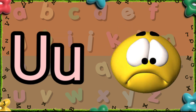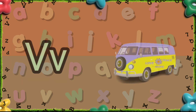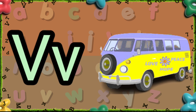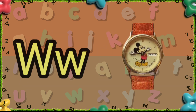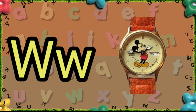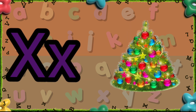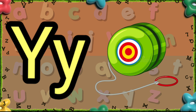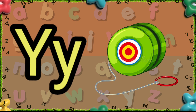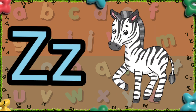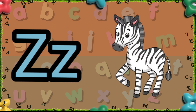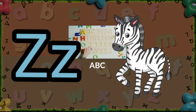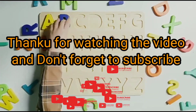U is for Upset. V is for Van. W is for Watch. X is for X-mas Tree. Y is for Yo-Yo. Z is for Zebra. Thank you for watching the video.